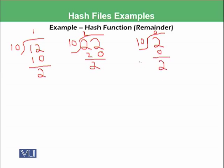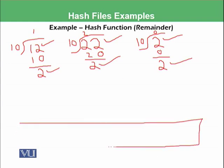So this could be one of the method to calculate that which bucket this record should go. For example, the record number 12, the record number 22, the record number 2, all should go into the bucket number 2, which is over here. This means we have here, for example, multiple buckets.